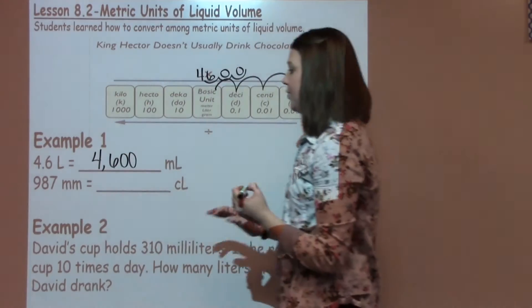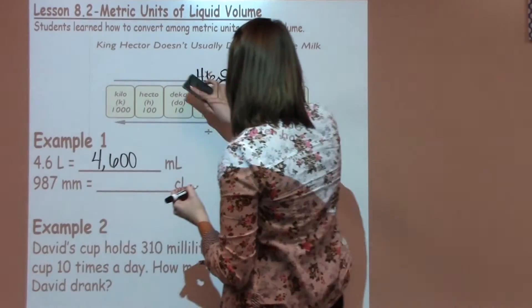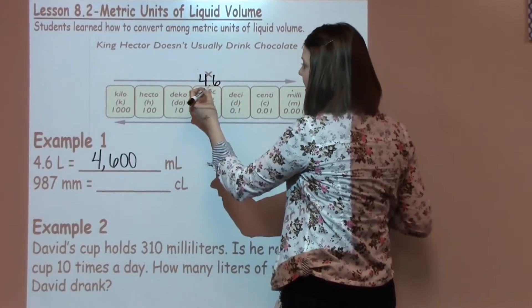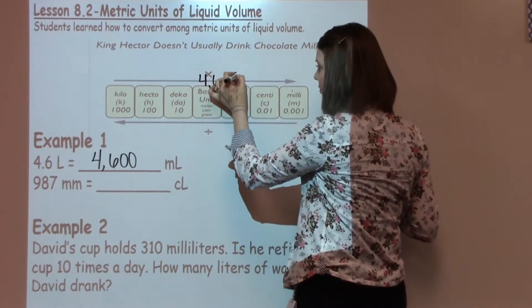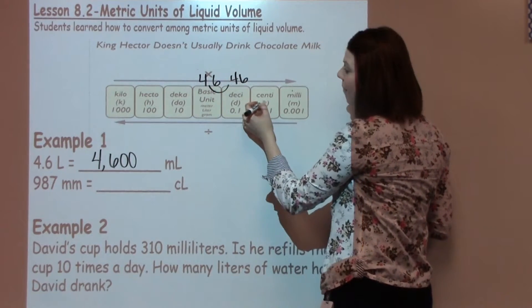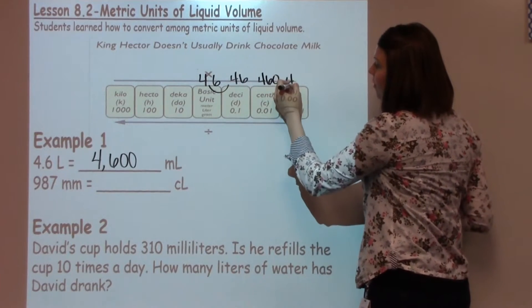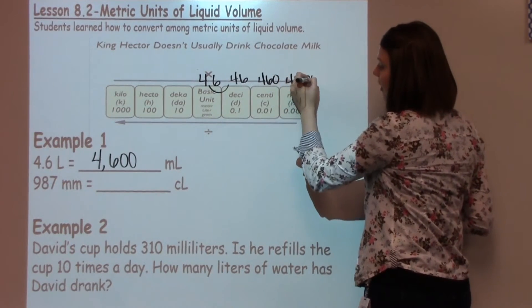Now some students prefer when they're using this to shift over each one of them. So they might take the 4.6 and they might hop over 1, it becomes 46. They might hop over to the centum which would become 460. They might go to the milli which would be the 4,600.